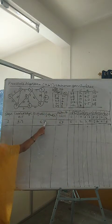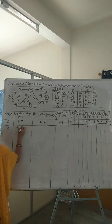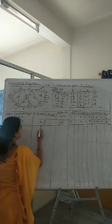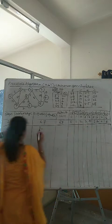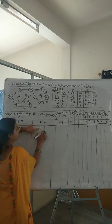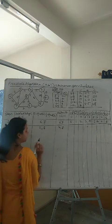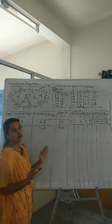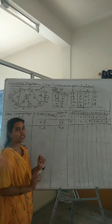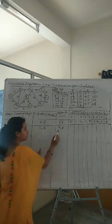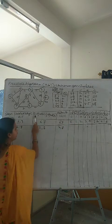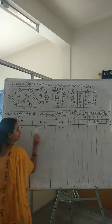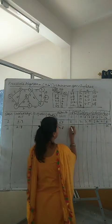The next edge is 2 to 8. Find(2): root node of 2 is 2 itself. Find(8): root node of 8 is 8 itself. i equals 2, j equals 8 — they are different, so we consider this edge. Remember: if i and j are the same, it means a cycle is formed and we do not consider that edge. Since they are different here, we accept 2 to 8 in the MST. Then union(2, 8): store 2 in the place of 8. Everything else remains the same.